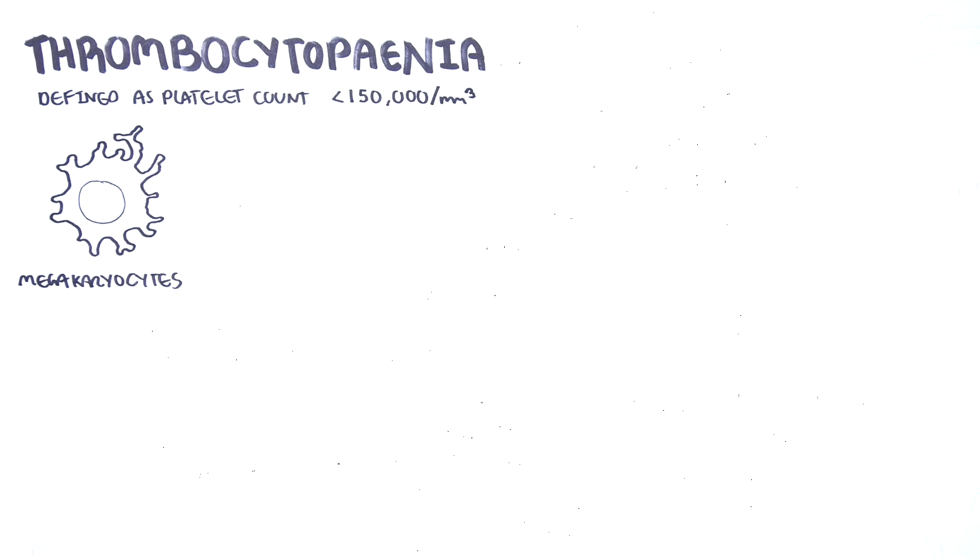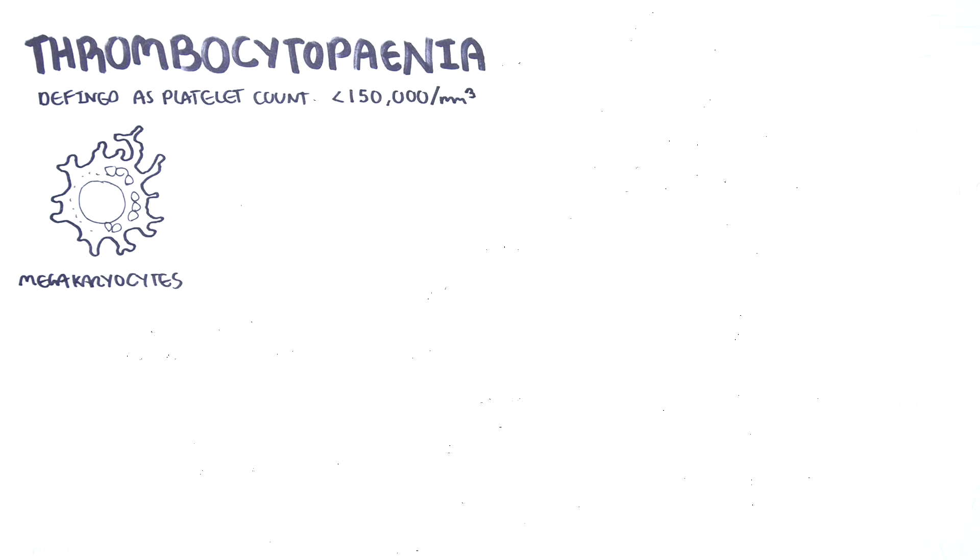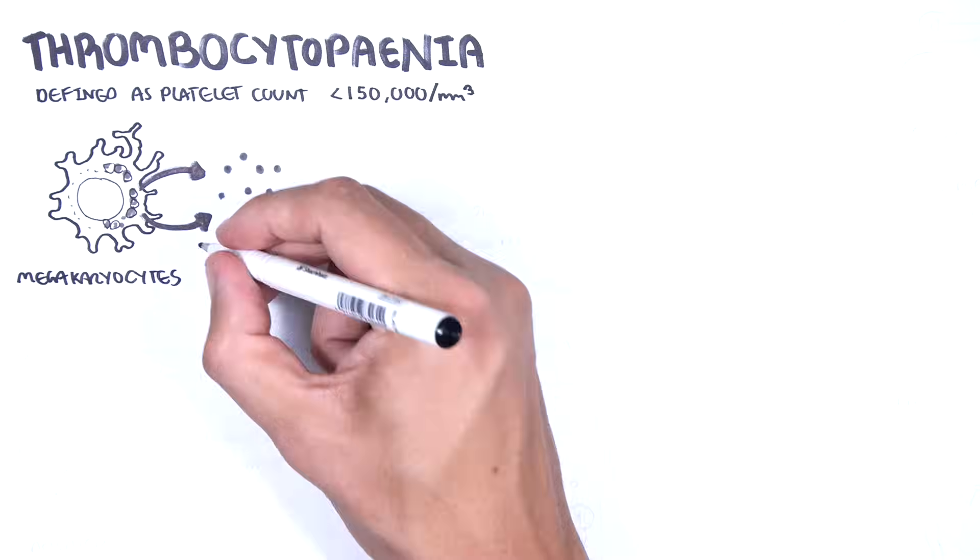Platelets are produced in the bone marrow from megakaryocytes. Each megakaryocyte produces 1,000 to 5,000 platelets.